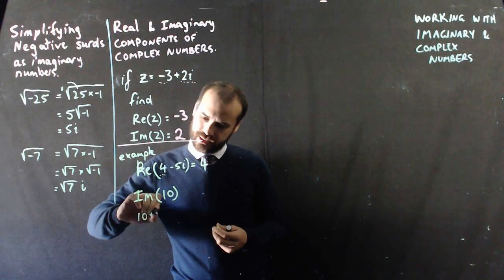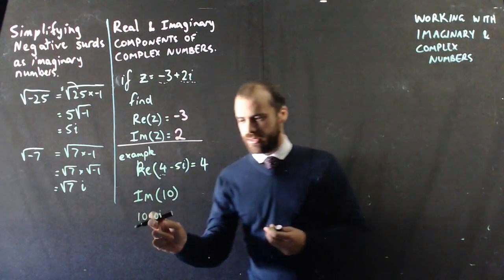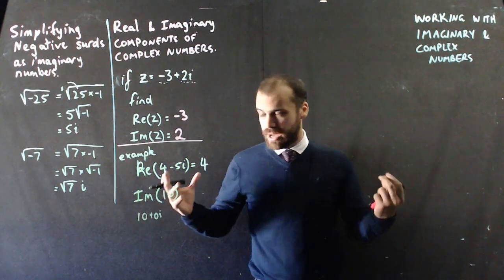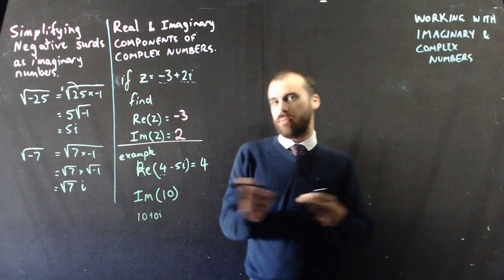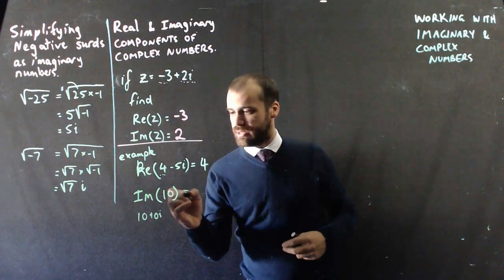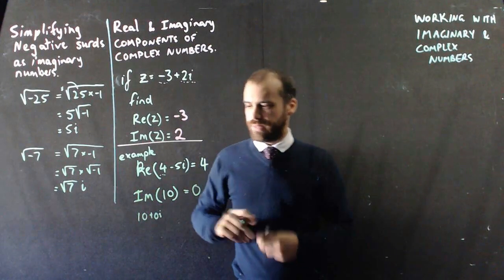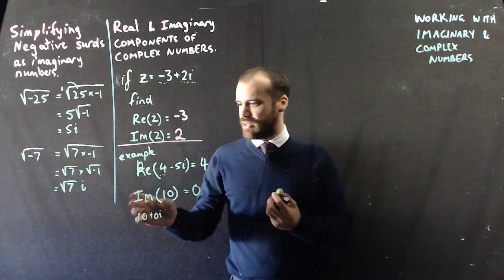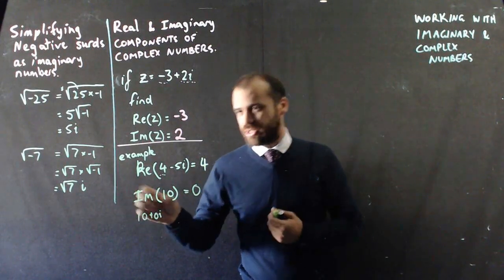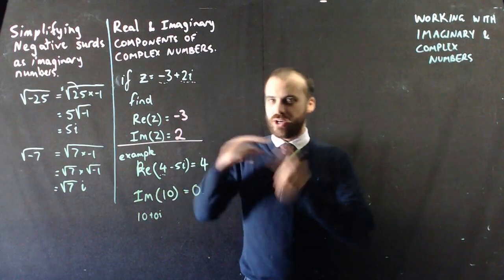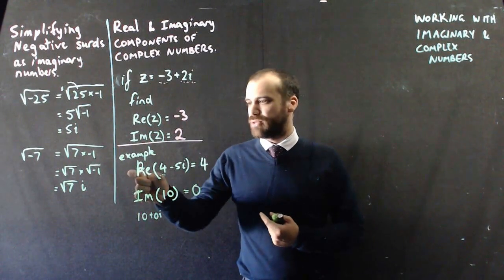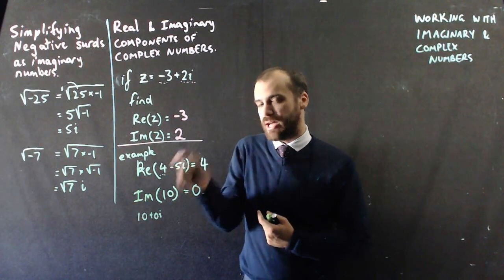10 plus 0i. It's a real number, there is no imaginary component, but don't say no imaginary component, say the imaginary component is 0. Alright, so that's how you get away with finding the imaginary component of a real number, and vice versa, like if you're finding the real component of a purely imaginary number.